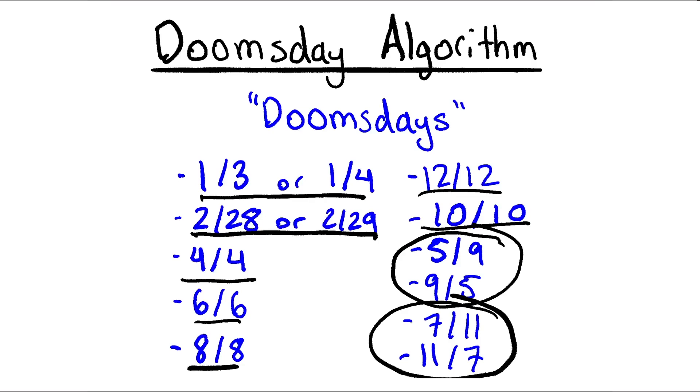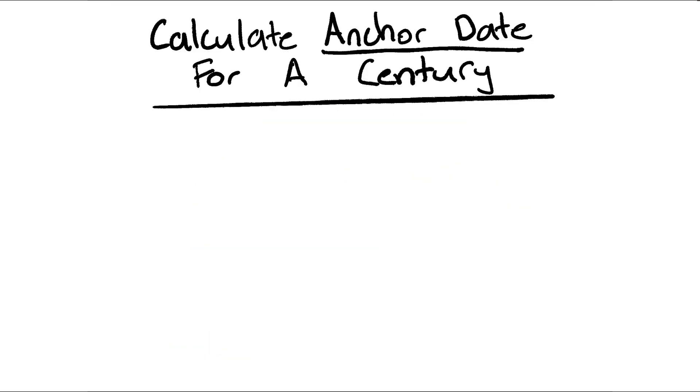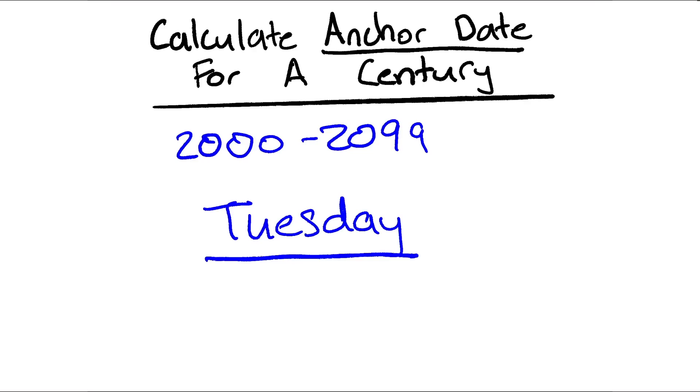Now the next issue is figuring out which weekday that is for any given year. So part of the algorithm is something called an anchor date. And the anchor date is just the day that all the doomsdays fall on. For the whole century of 2000 to 2099, the anchor date for the century is a Tuesday. So all our calculations will be built off the fact that a century anchor date is Tuesday. Now within each century, each year has its own specific anchor date. So each year might have a different day that all those doomsdays fall on. But we need to utilize the century anchor date to find the specific year anchor date.